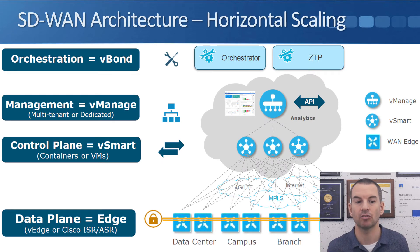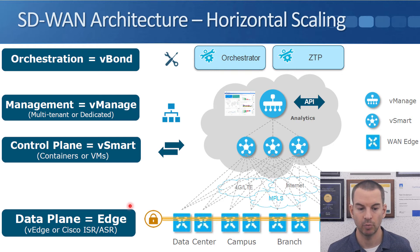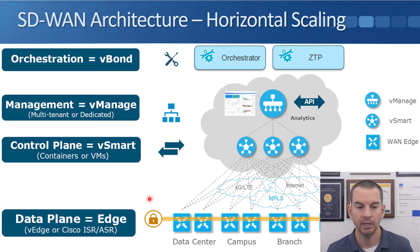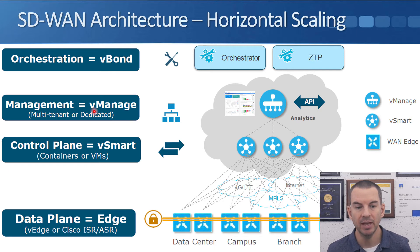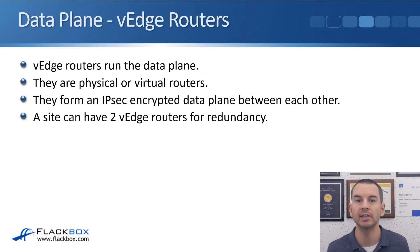SD-WAN has four main components. In the data plane at the bottom, we have our edge routers — either a V-Edge router originally from Viptela, or various Cisco router models — and these can be physical or virtual. Then we have the controlling components, which all run as separate virtual machines: the V-Smart controller for the control plane, the V-Manage NMS system for management, and the V-Bond orchestrator for orchestration. The solution can scale — larger environments can simply add more routers, V-Smart controllers, V-Manage systems, and V-Bond orchestrators.